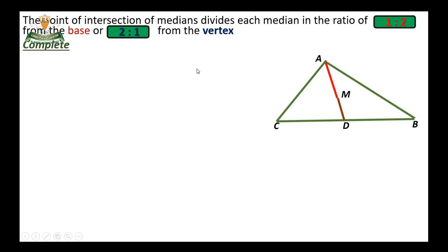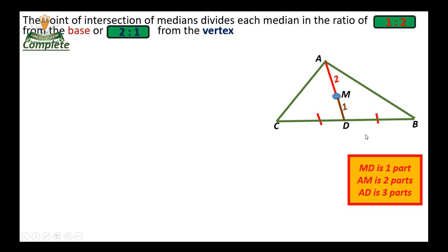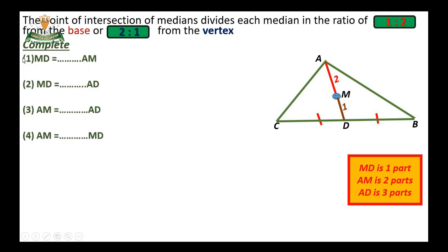In the figure, M divides the median AD in the ratio of one to two from the base, or two to one from the vertex. Hence, MD is one part, AM is two parts, and AD is three parts. So MD equals one-third of AD.